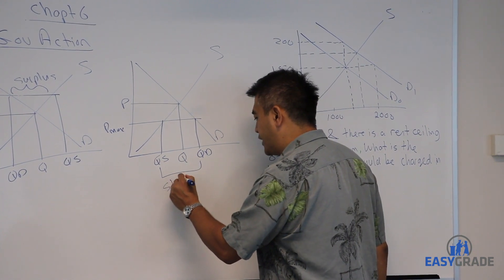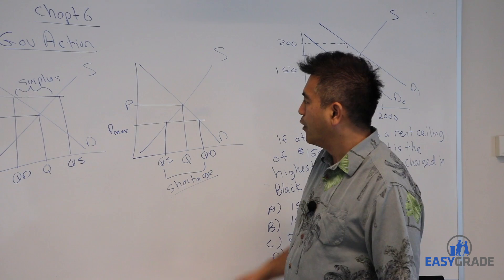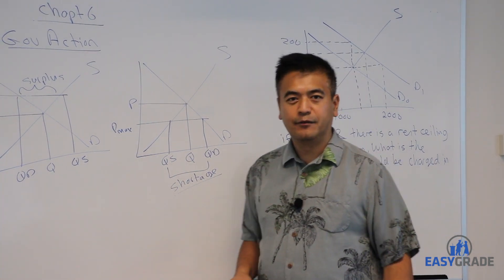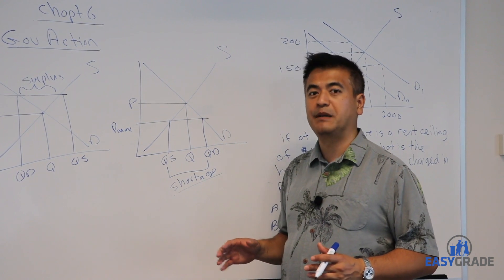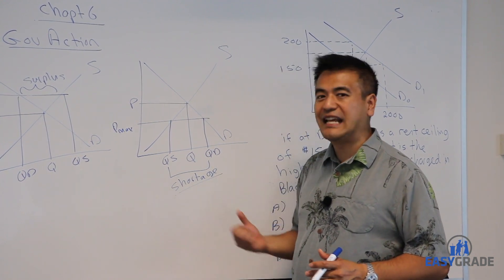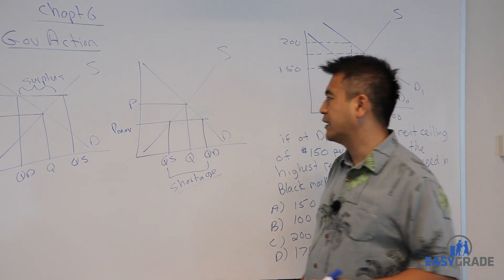And in the shortage situation, we will have a black market. When there are not enough units supplied by the market, people will seek to get those units by way of paying more in the underground economy, which is the black market.